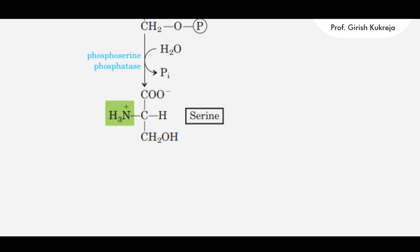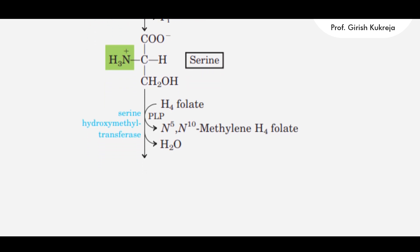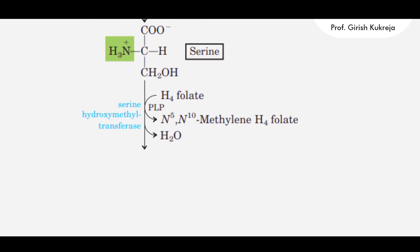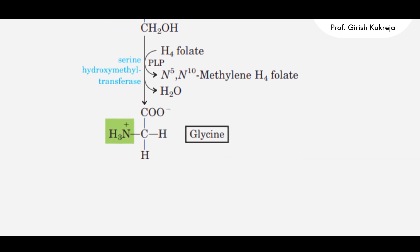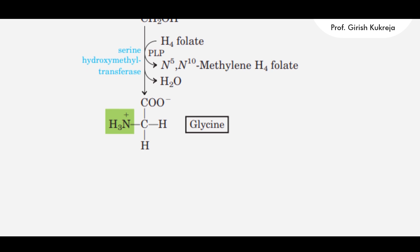Serine serves as a precursor for the next amino acid, glycine. It undergoes removal of 1-carbon, the beta-carbon or C3 of serine. The removed carbon is accepted by tetrahydrofolate which then gets converted to N5N10-methylene tetrahydrofolate. The reaction is catalyzed by serine hydroxymethyl transferase which also requires pyridoxyl phosphate for its activity.